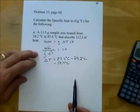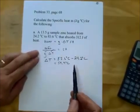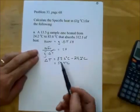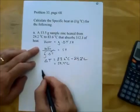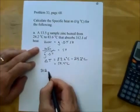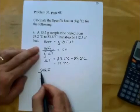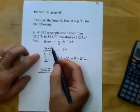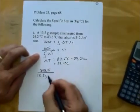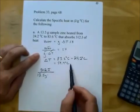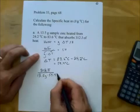Any time you have an equation rearranged like this, once you have all the parts verified, you just plug and chug. We have heat — 312 joules — coming right off the rearranged equation. We have the grams — 13.5 grams. And we have delta T — we already figured it out — it's 59.4 degrees Celsius.